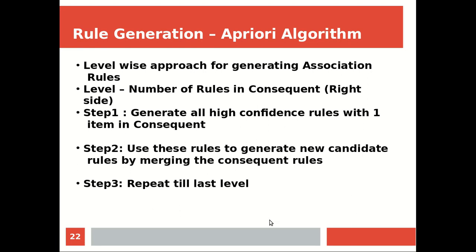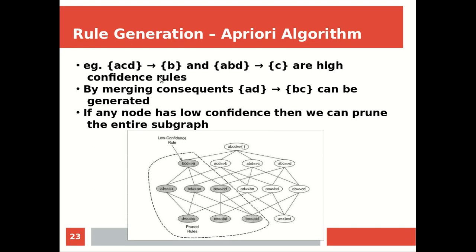Then you can merge into three, four, five and so on. When you get to the last level, you can get the high confidence rule. For example, if you have ECD goes to B and ABD goes to Z — this is only one level. Now you can combine the two levels, and B and C can combine. Remember they will be disjoint.